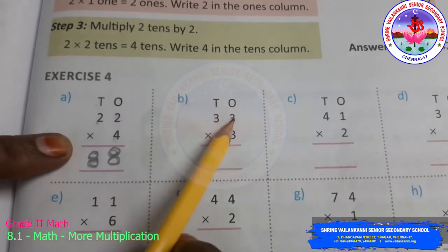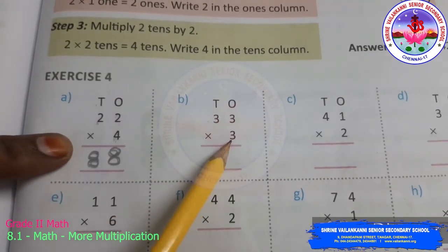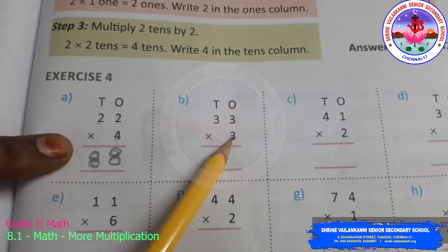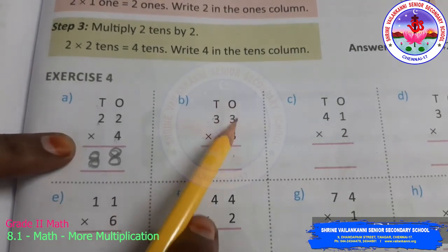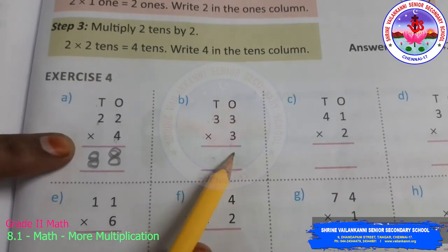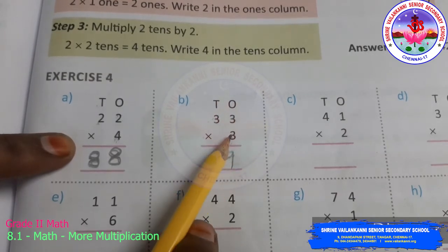Now, here. 33 into 3. First, this is the number you are going to multiply with. This number you should multiply with the ones. Write the answer. Then this with the tens. Then write the answer. 3 into 3. Nine. Again.